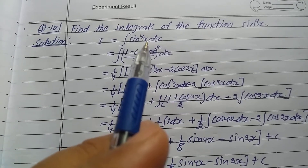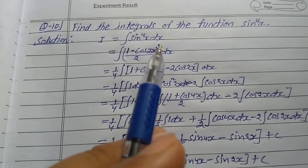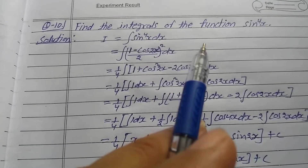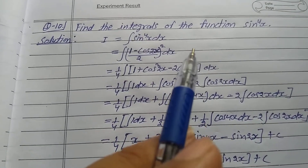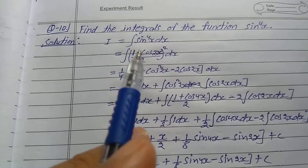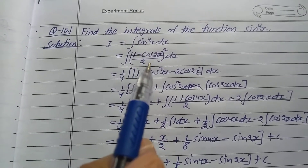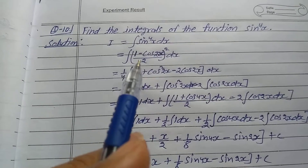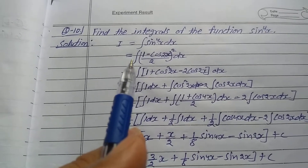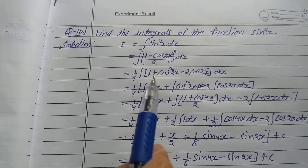This can be written as (sin²x)² whole square. Using the formula cos2x = 1 - 2sin²x, sin²x is written as (1 - cos2x)/2. So I equals the integration of ((1 - cos2x)/2)² dx.